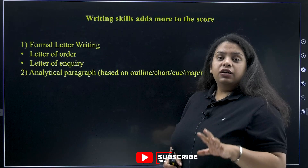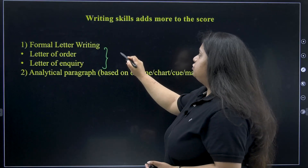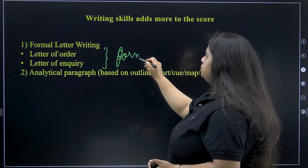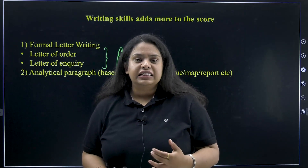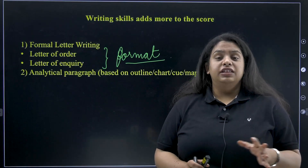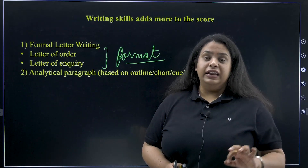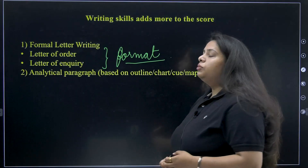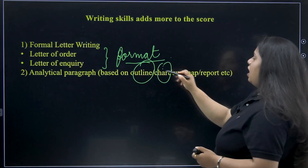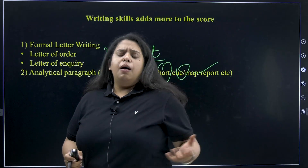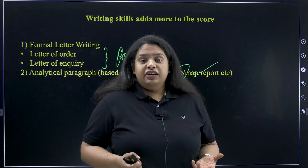In writing skills, you will get a formal writing question — a letter of order or a letter of inquiry. You need to be clear about the format for both: who you write them to and how. Practice writing these on a daily basis. The second thing you will get is an analytical paragraph based on an outline, chart, map, or report. They may give you a pie chart and ask you to write one analytical paragraph describing the data.